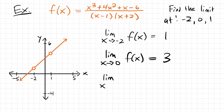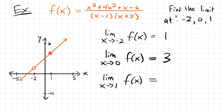Then finally, we'll look at the limit as x approaches 1 for the function. We'll start at the right side of the function and follow it until we get to x equals 1, and this lines up with y equals 4. If we follow the function from the left side and go up until we get to x equals 1, we also find ourselves at the y equals 4 mark. Both sides agree, so the limit from both sides is 4.